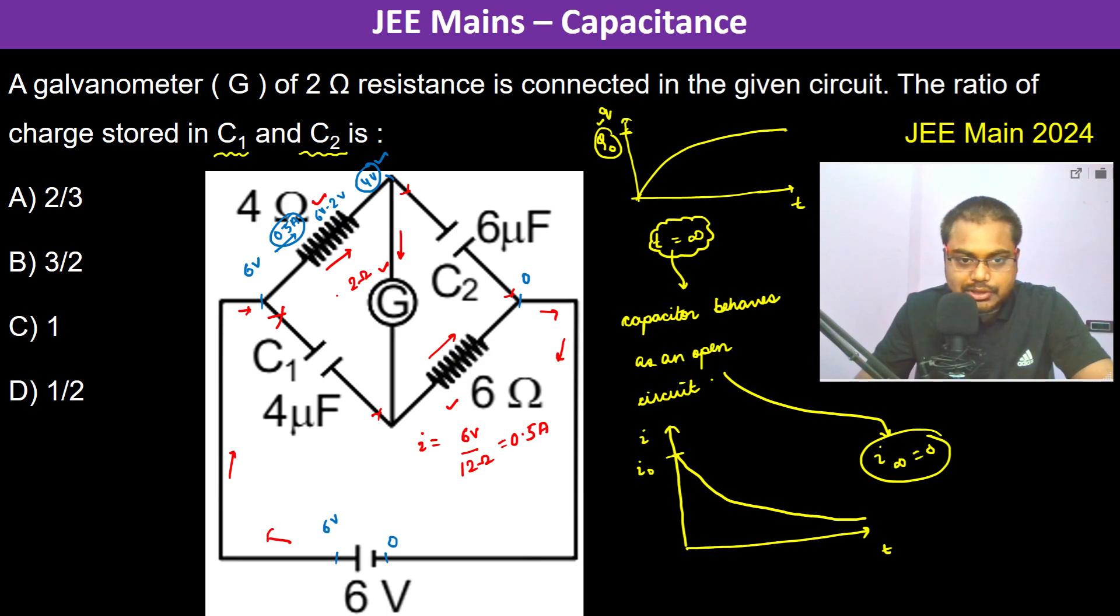Again through this, 0.5 ampere is flowing and the resistance is 2 ohms, so 1 volt drop. Therefore here it becomes 3 volts.